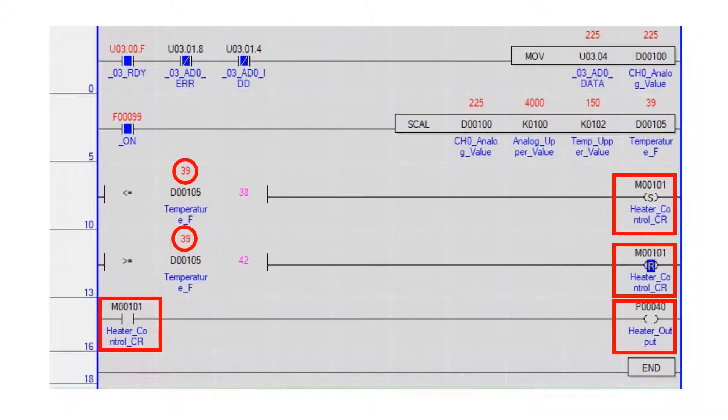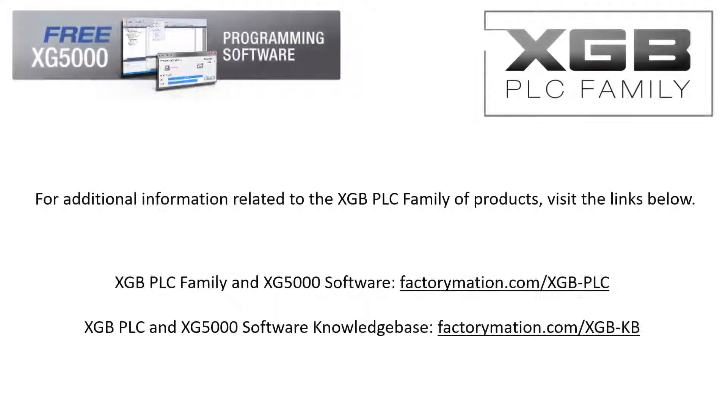In conclusion, the program uses an analog signal from a span temperature signal conditioner and controls a heater to maintain a temperature between 38 and 42 degrees. For additional information related to the XGB PLC family of products, visit the links below.